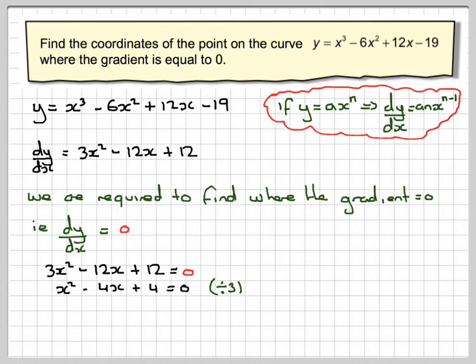That's a nice and easy one to factorize. This becomes x and x. This will become minus 2, minus 2. And therefore, we just get one answer, which is x is equal to 2.